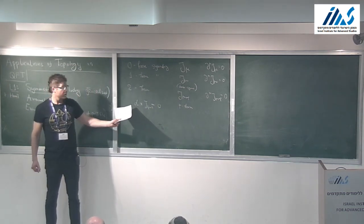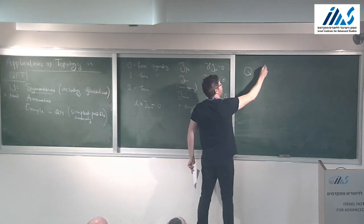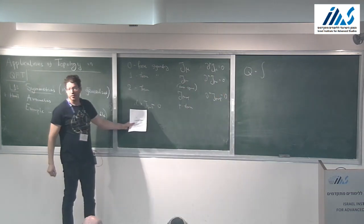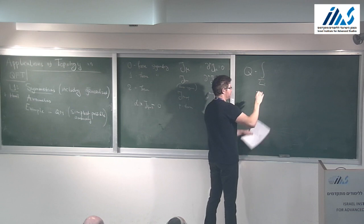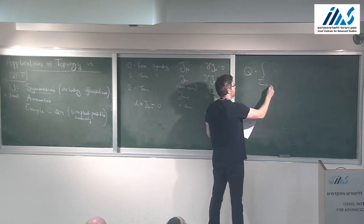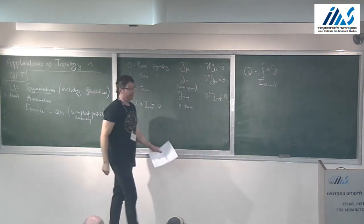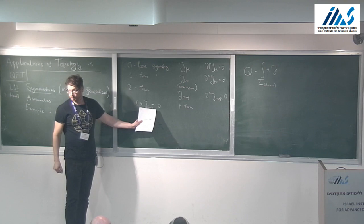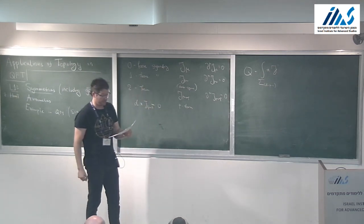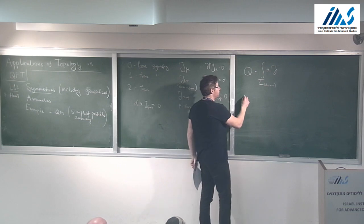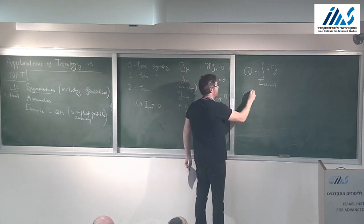Once you have such a symmetry and such a current, you can construct a charge. A charge is the integral of the current J over some surface of dimension D − P − 1, integrating ⋆J. For a P-form symmetry, ⋆J is a D − P − 1 form. The operator that acts on the Hilbert space is the exponential of the charge.